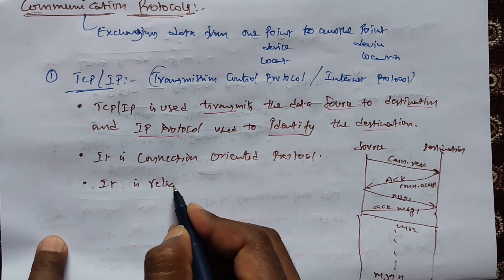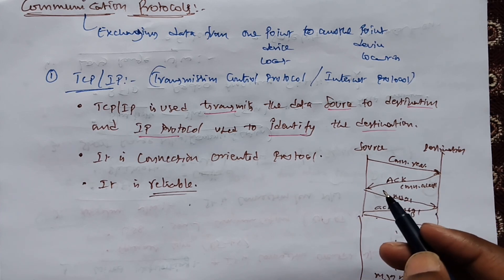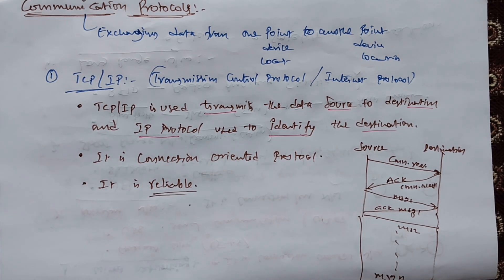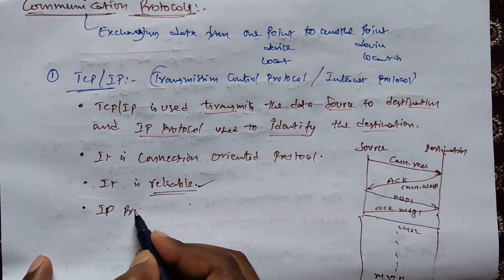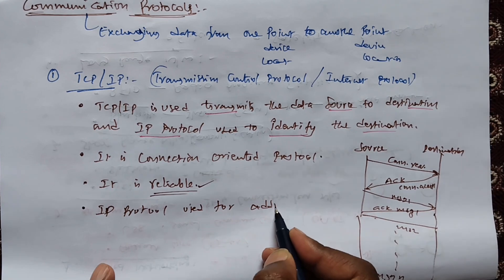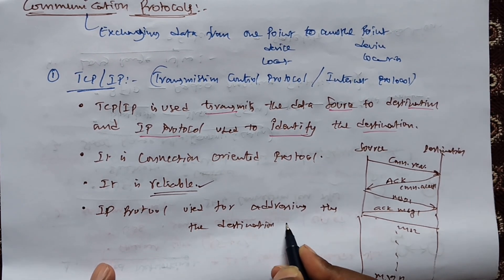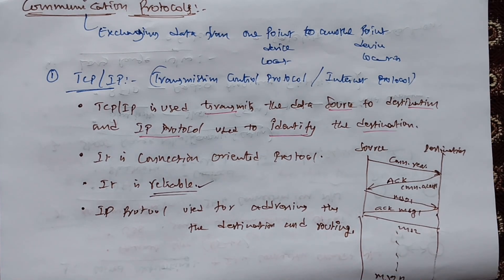TCP is a reliable protocol. Reliable means there is a guarantee for message delivery. If the message is not delivered, it will wait for acknowledgement. If no acknowledgement is received after some time, the same message will be sent again and again until acknowledgement is received. The IP protocol is used for addressing the destination and routing.